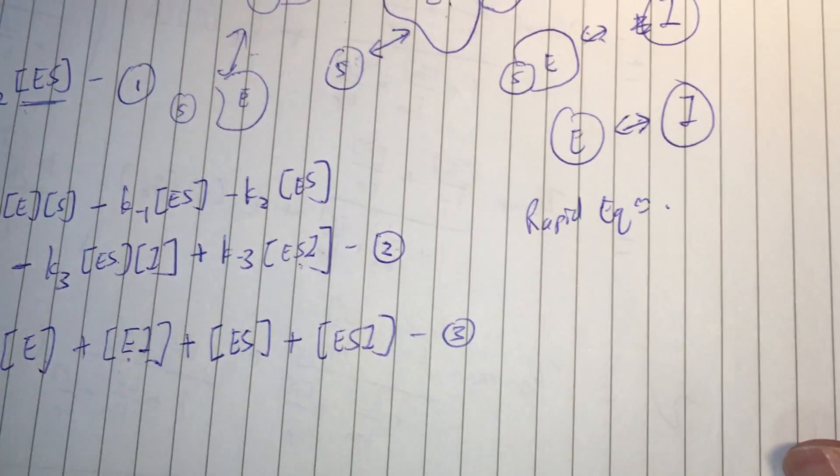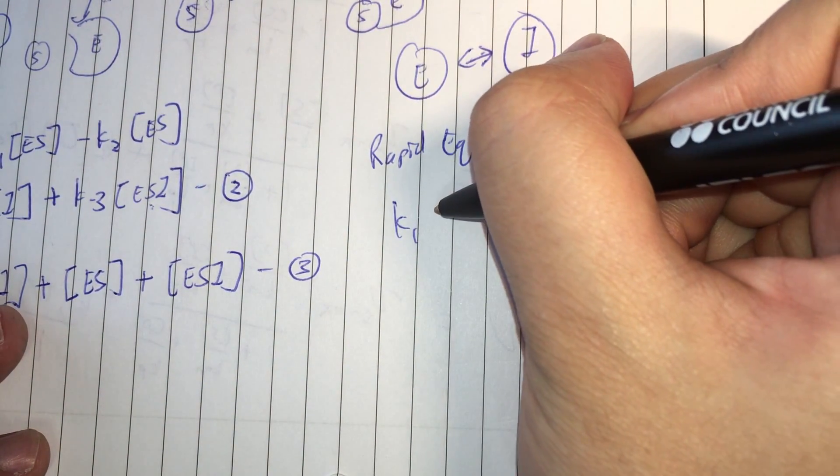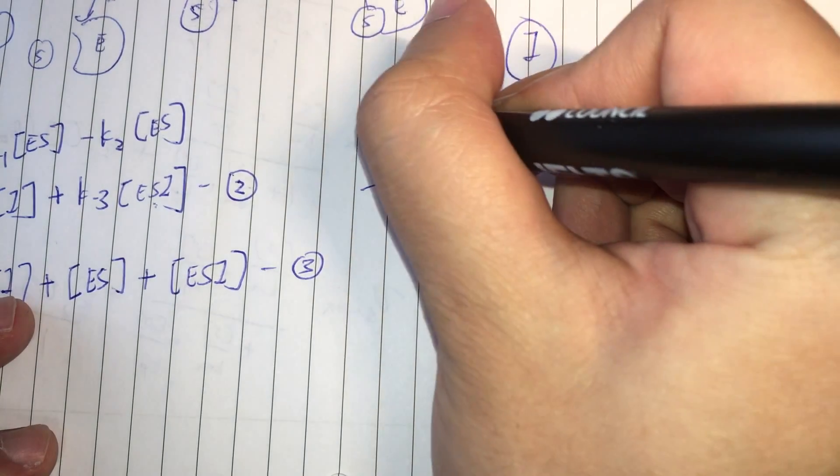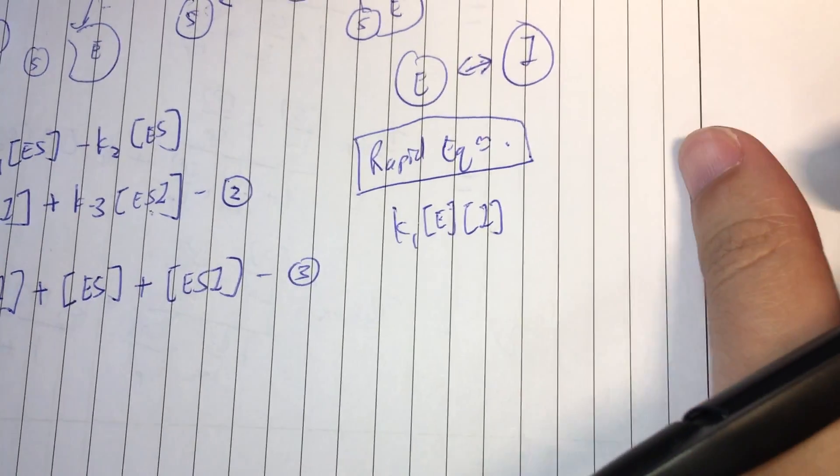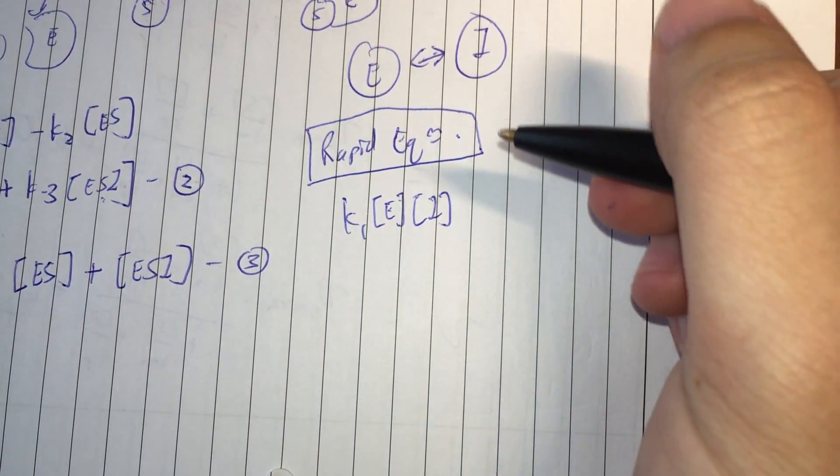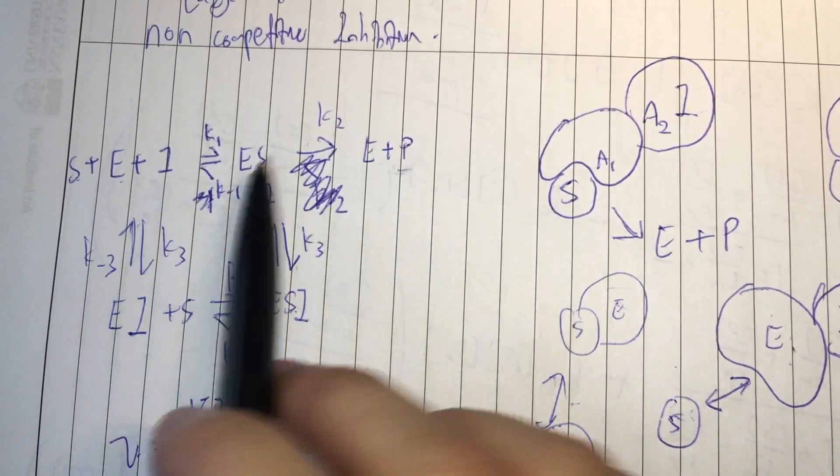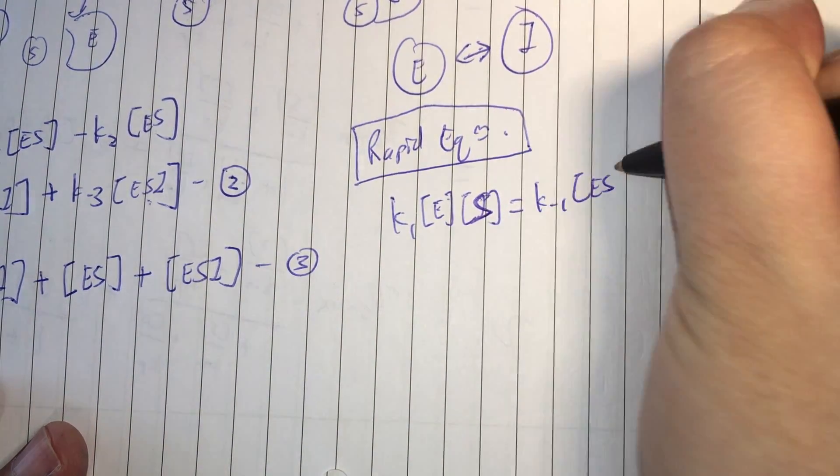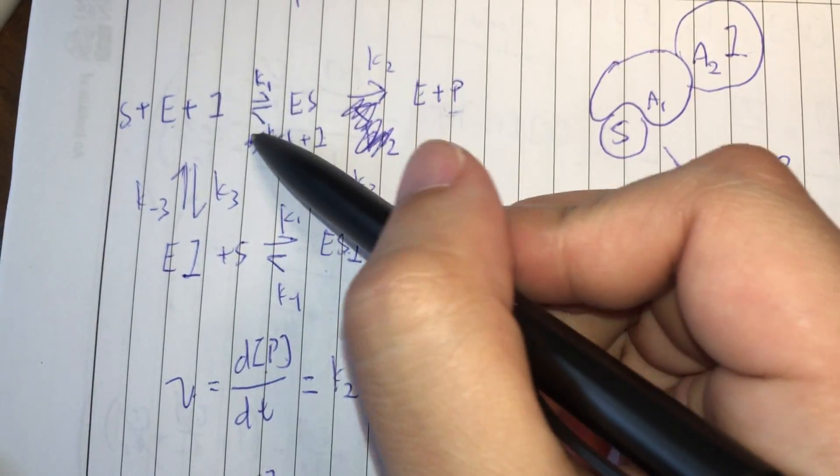So, let's move on with that. Now, what does that mean? So, the forward rate K1 into E and S. This is under rapid equilibrium. Of course, the quasi-steady state will have a slightly different approach. But, we will assume rapid equilibrium for now, for simplicity's sake. So, K1 into E into S will be equals to the backward rate into ES. Forward rate, backward rate. So, this is the first one.